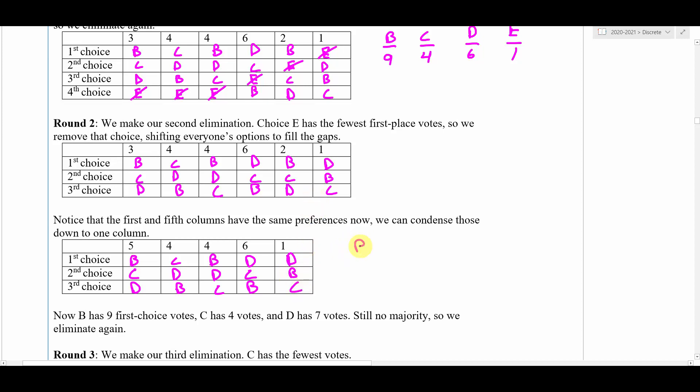Then we retally. We've got B, C, D, and we're going to count up those first place votes again. Now B's got nine votes, C has four votes, and D has seven votes, so C gets eliminated.